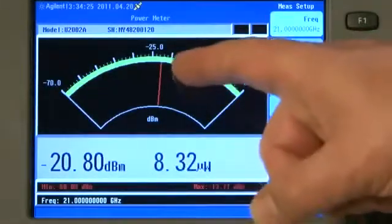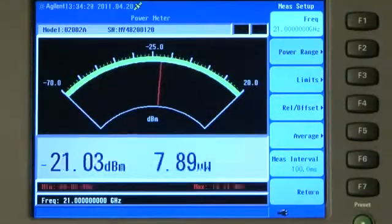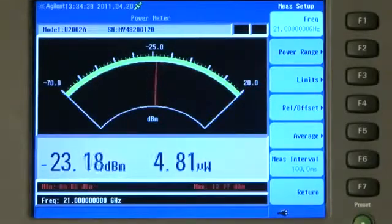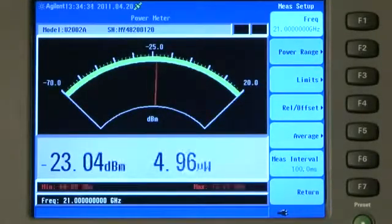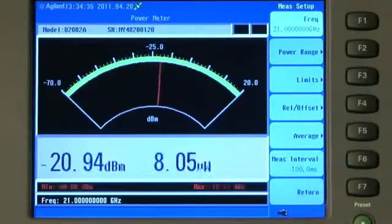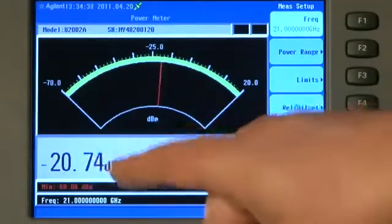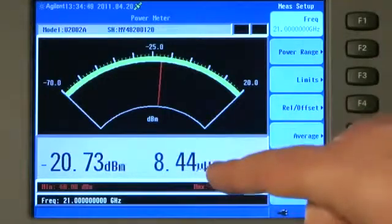As well as the graphical display here with the meter, you'll see as the level goes up and down, such as in the situation of microwave fading, we can see the level decreasing and increasing. It shows the measured value in dBm and also in watts,